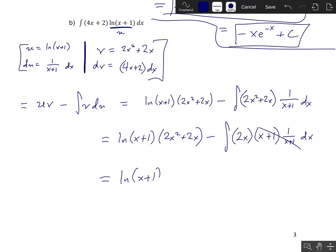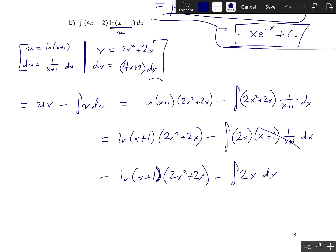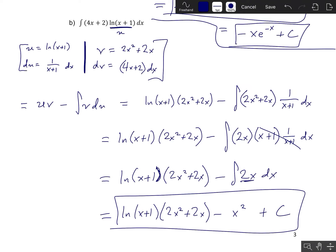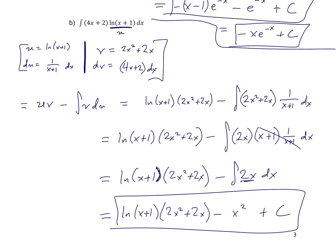This ends up being ln(x+1) times (2x squared plus 2x), minus the integral of 2x dx. That integral is much nicer to compute. So this is ln(x+1) times (2x squared plus 2x), minus the antiderivative of 2x, which is x squared. So the answer is ln(x+1)(2x squared plus 2x) minus x squared plus c.